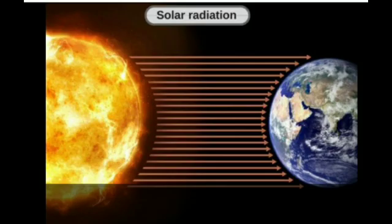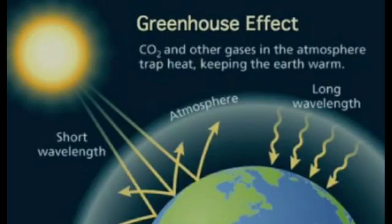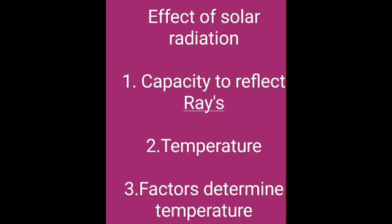Next we saw about solar radiations and their effects. Solar radiation is the heat the earth receives from the sun in the form of radiations. The effects include the capacity to reflect rays and changes in temperature. We also saw the factors that determine the weather.